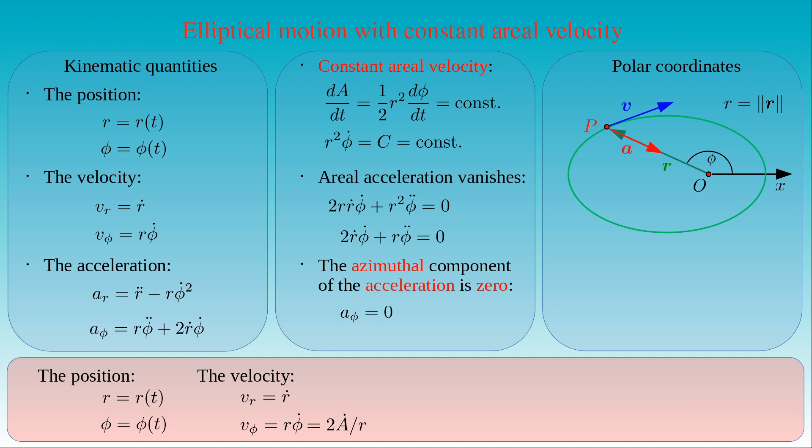This equation is still a general expression for elliptical orbits. If we take the conservation of the aerial velocity into account, we can see that V_phi is equal to the constant C divided by the radial coordinate R. This means that the azimuthal component of the velocity of the orbiting body is inversely proportional to its distance from the foci, where C is the proportionality constant.